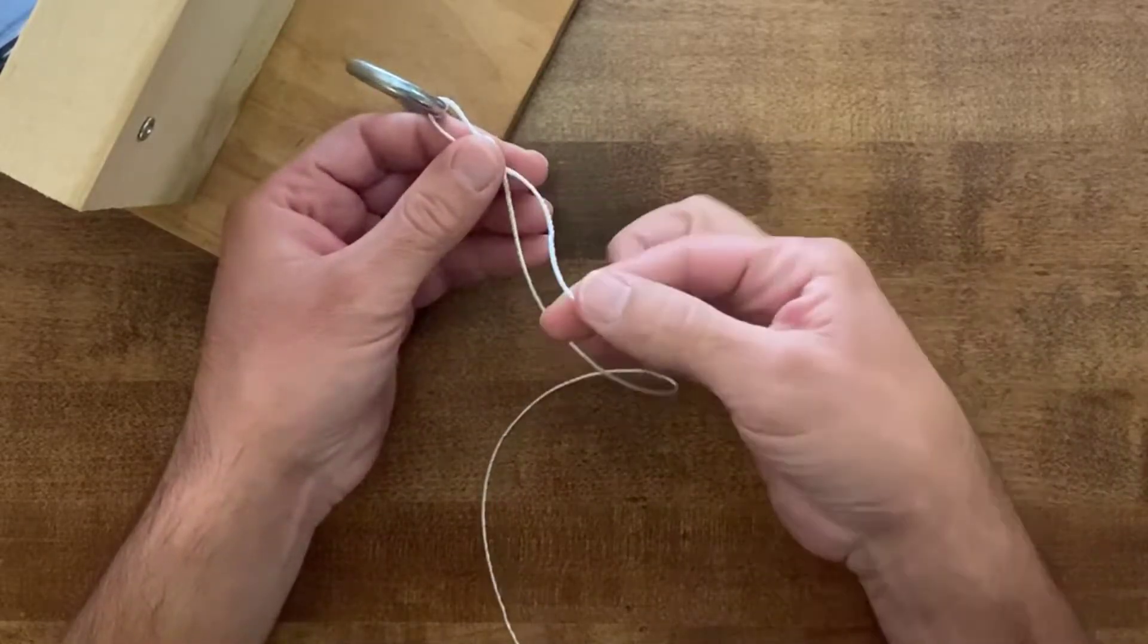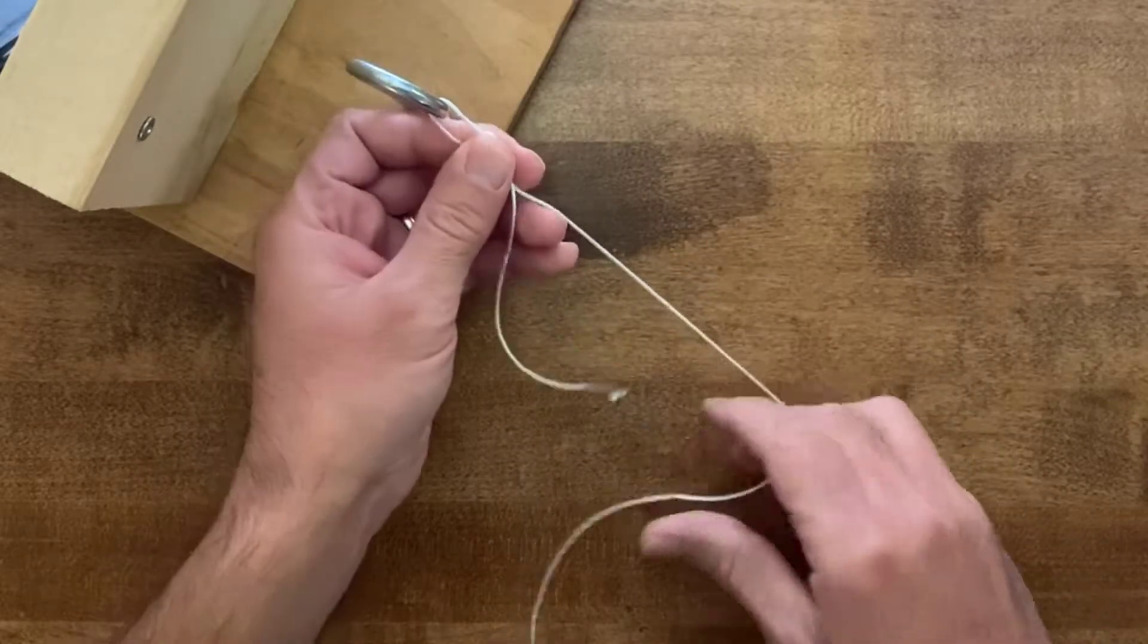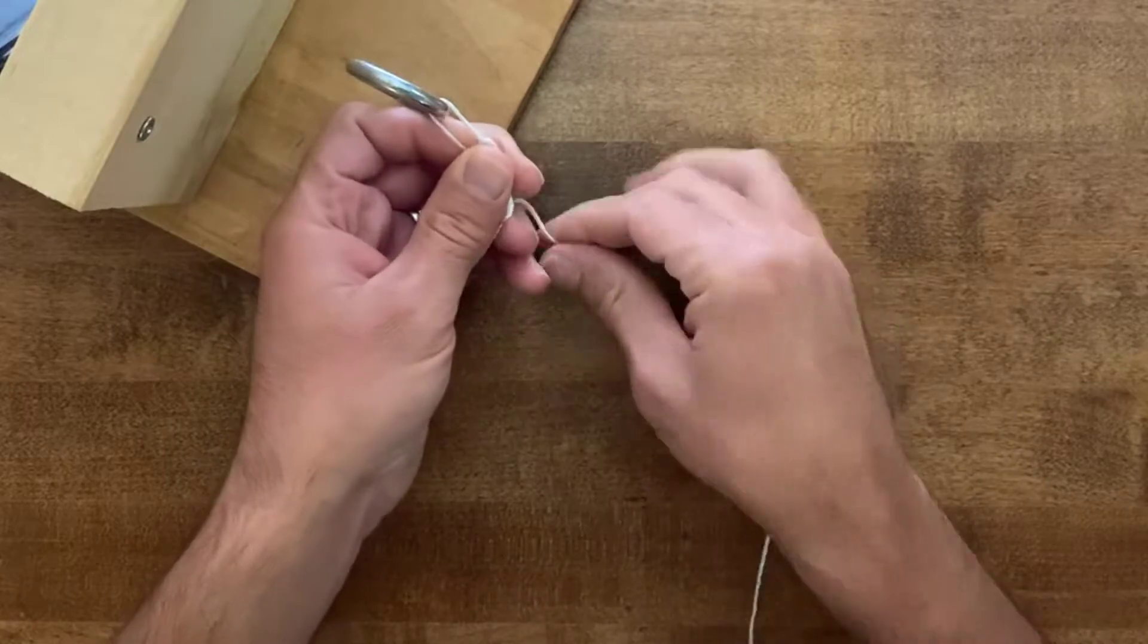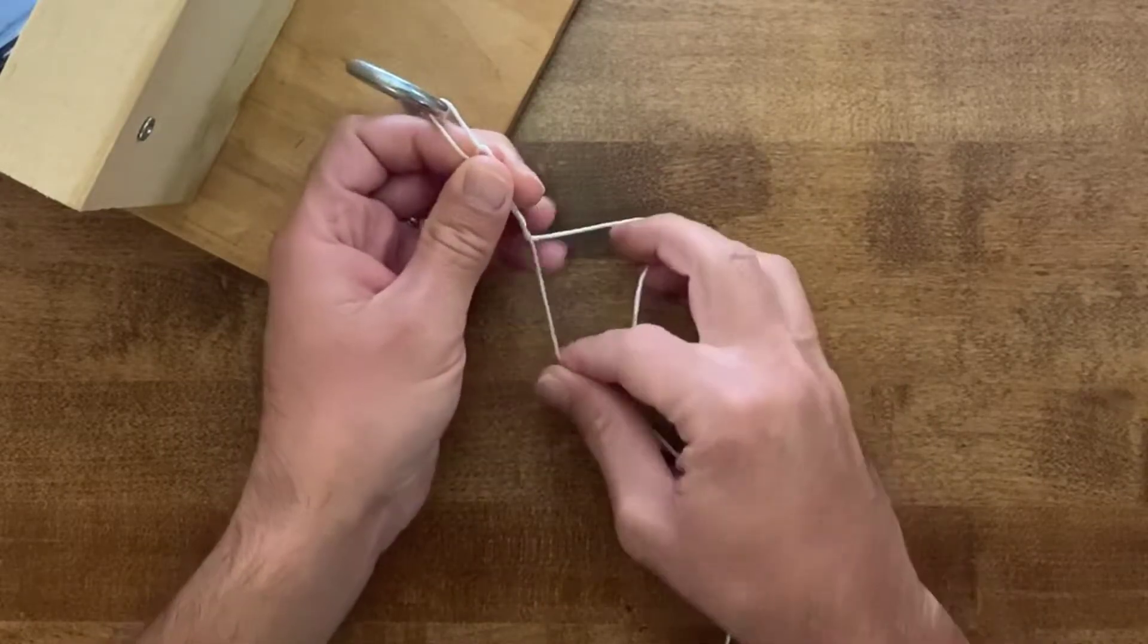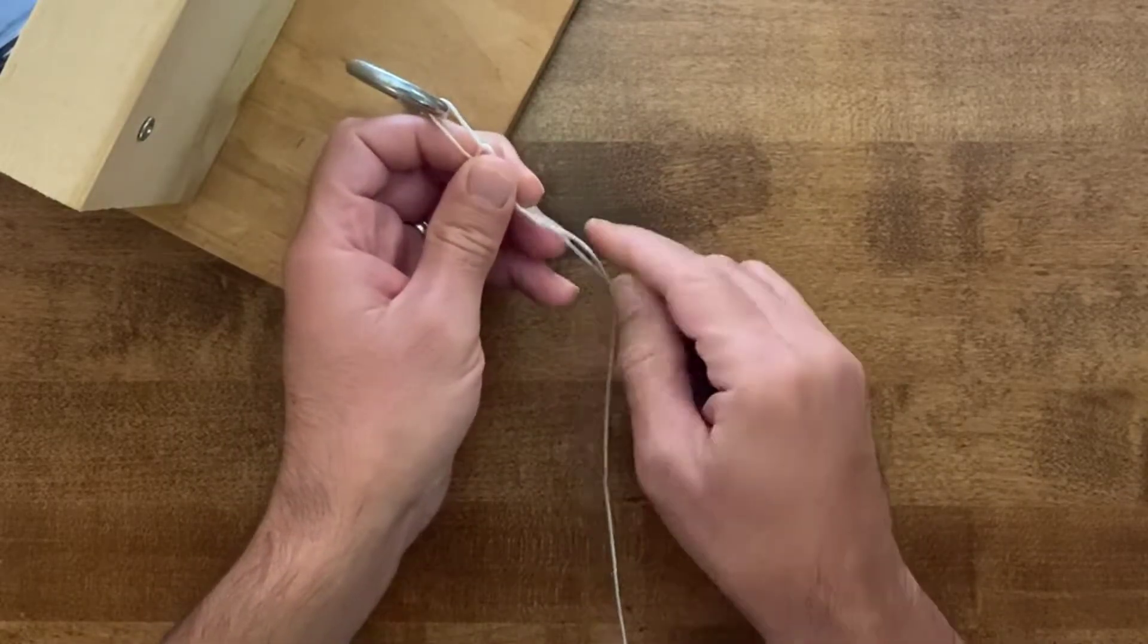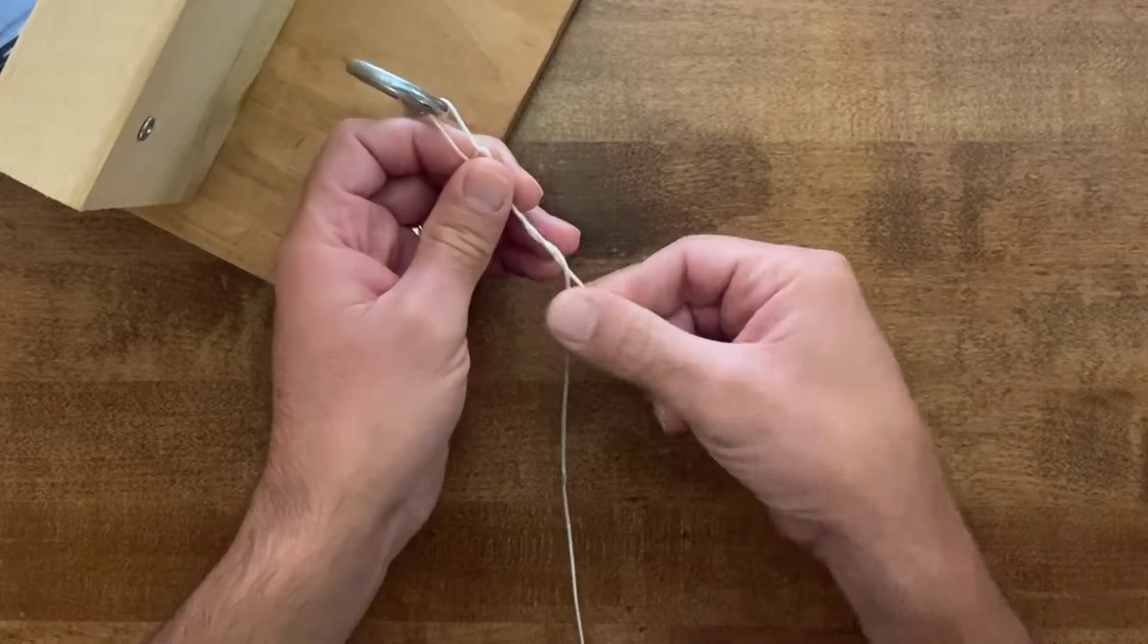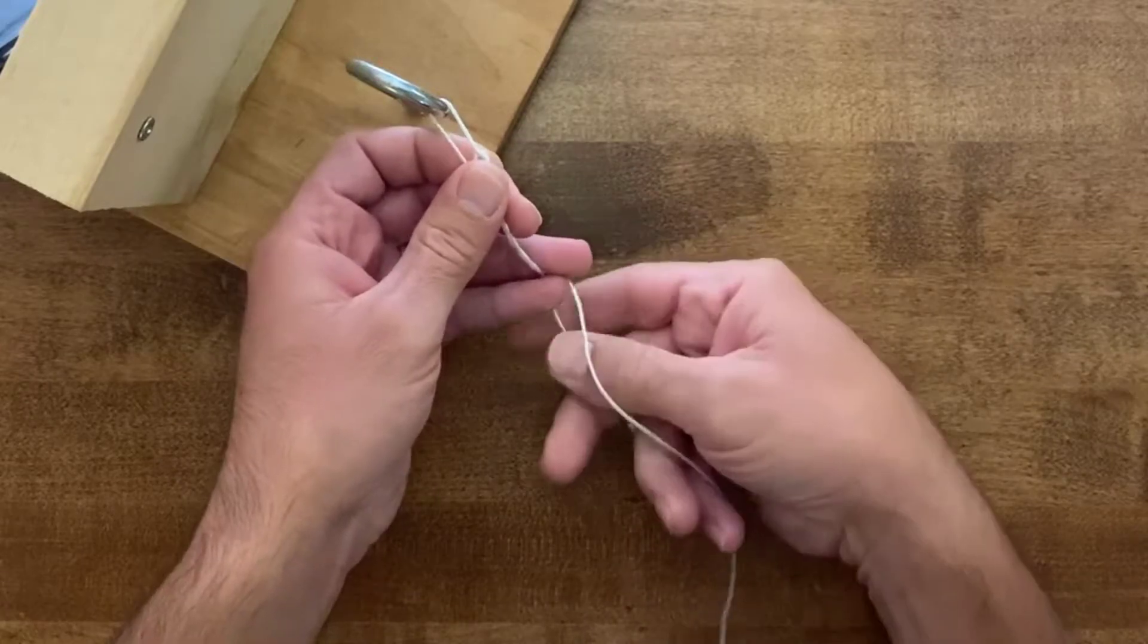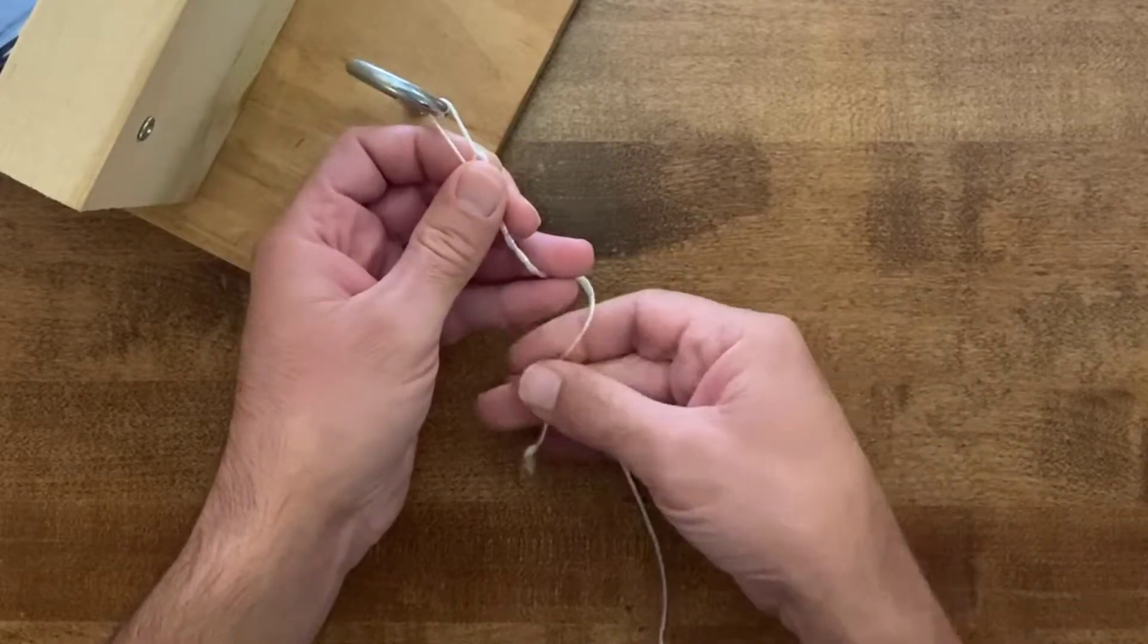Now we're going to wrap around the line one, two - in thicker monofilament you can wrap it four times, and in thinner braid you want to wrap it six times.